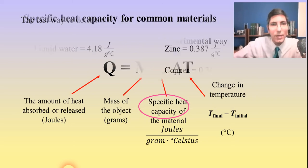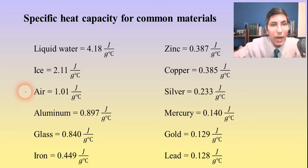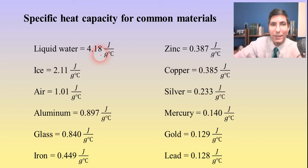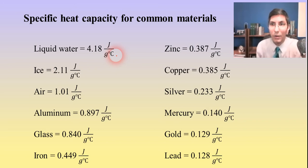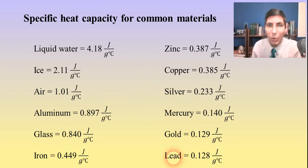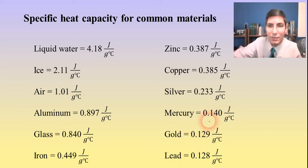Let's talk about specific heat capacities for different materials. I've tried to organize this from the highest to some of the lowest. This is just a selection of materials we might use in class or homework problems. As you can see, liquid water has a very high specific heat capacity — 4.18 joules per gram degree Celsius — meaning the water in that pot takes quite a while to heat up and likewise quite a while to cool down. Metals like iron, aluminum, mercury, gold, and lead have very low specific heat capacities, meaning they heat up and cool down very quickly with very low resistance to temperature change.